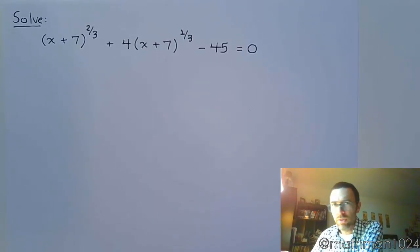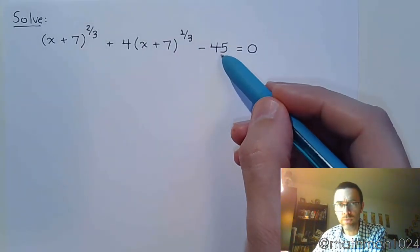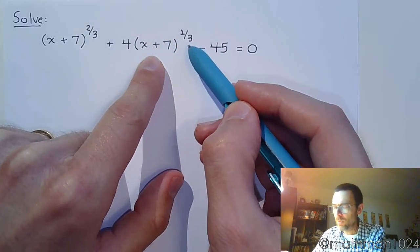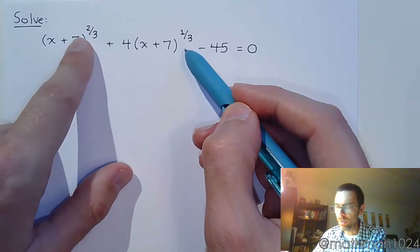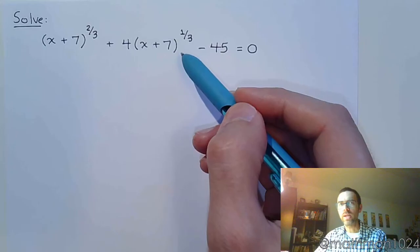Here is an example of an equation that is quadratic in nature. We know this. We have a constant term, we have a variable expression, this x plus 7 to the 1/3, and we see the same thing over here but with double the power. So this is quadratic in nature.